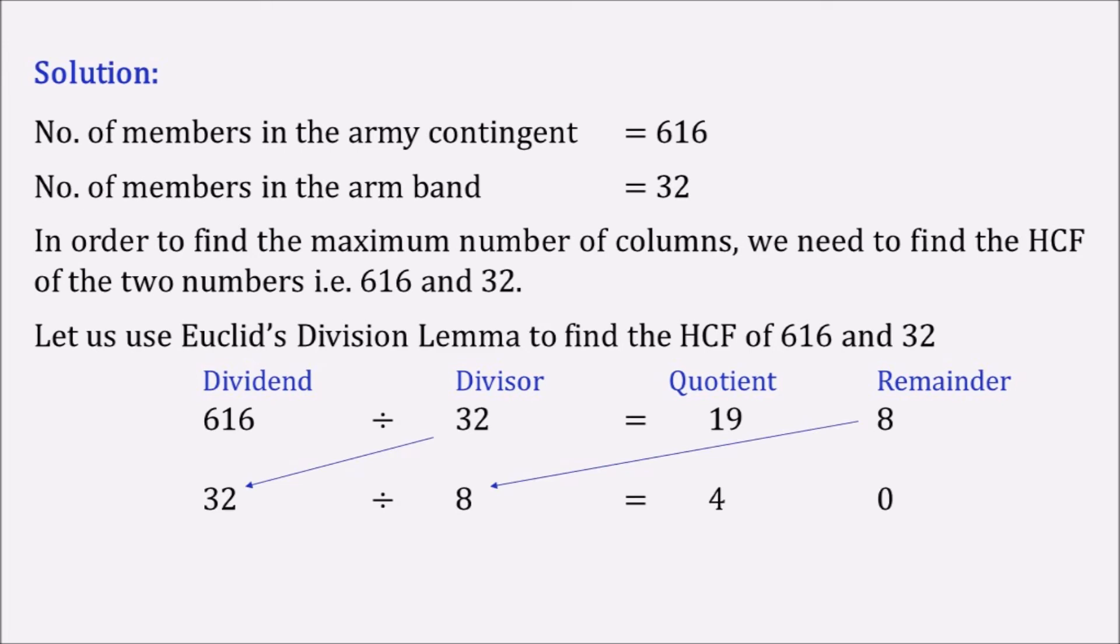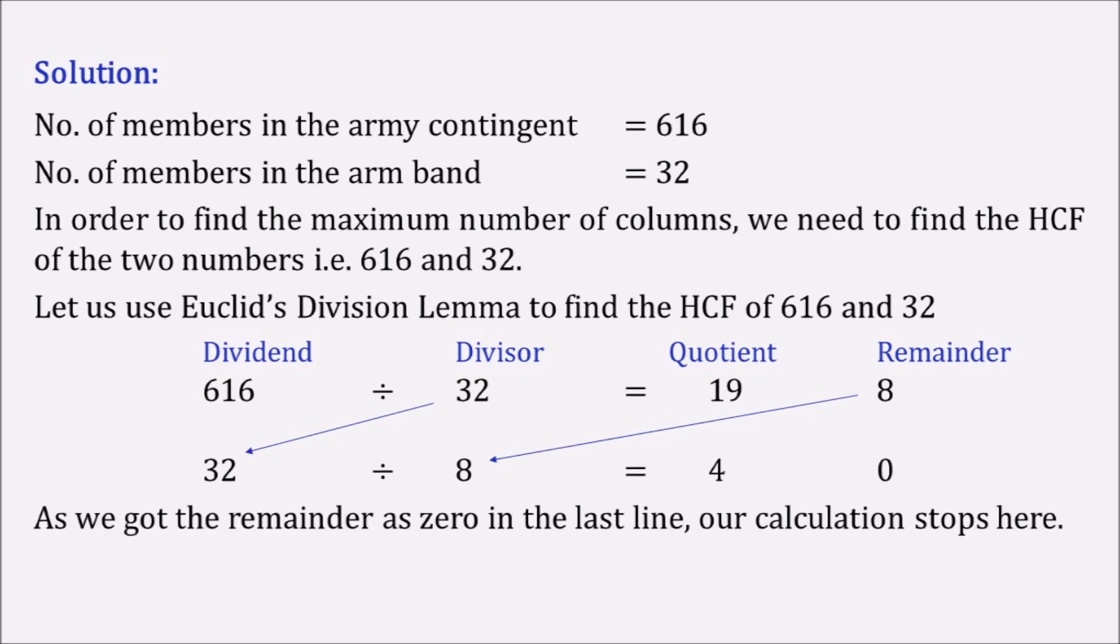So after dividing 616 with 32 we are getting a remainder of 8. Now again dividing the previous divisor 32 with our new remainder 8 we are getting here as a remainder 0. We very well know that once we get the remainder 0 our calculation stops and the divisor of this particular line is our answer.